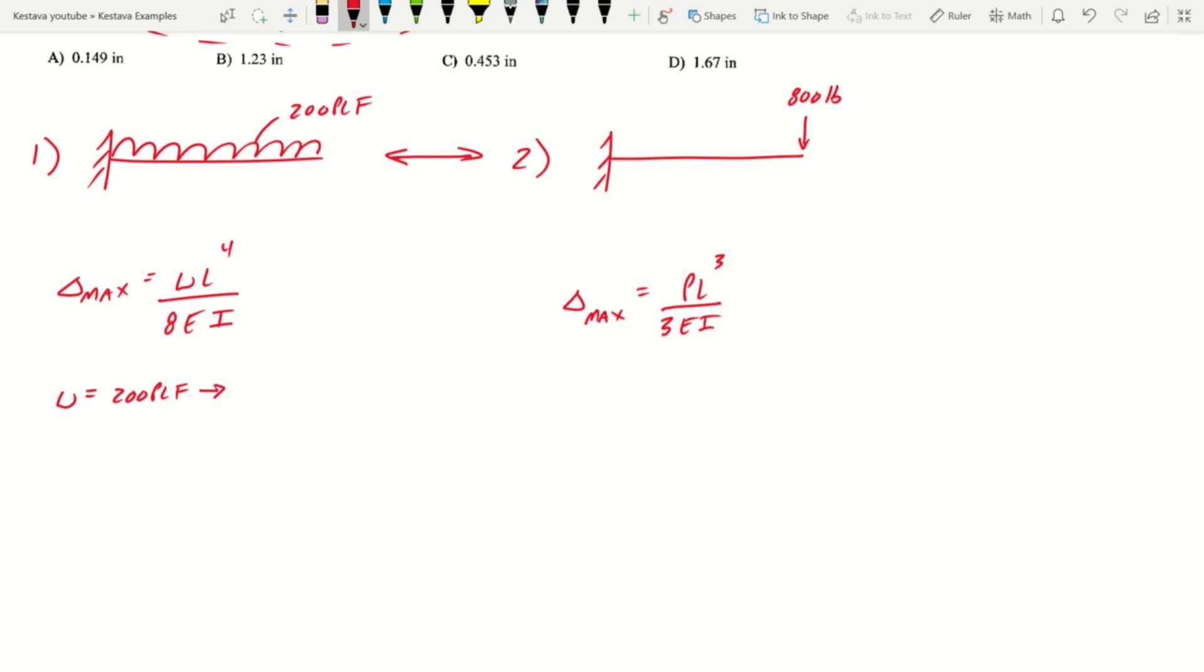Let's break down w, our loading criteria which is 200 plf. We actually want to break that into pounds per lineal inch, so we need to divide that by 12, we get 16.67 pounds per lineal inch pli. The only thing that can trip you up with deflection is having inconsistent units.